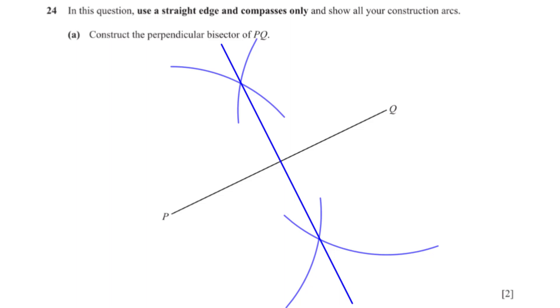In this question, use a straight edge and compasses only and show all your construction arcs. Construct the perpendicular bisector of PQ. With our pair of compasses, we stand at point P, open the compass to a width that is more than half of PQ and inscribe a set of arcs above and below PQ. Using the same compass width, we stand at point Q and inscribe another set of arcs above and below PQ. When we are done, we use a ruler to draw a straight line passing through the intersection point of the arcs.